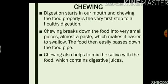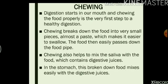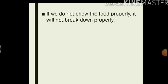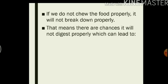Chewing also helps to mix the saliva with food which contains digestive juices. In the stomach this broken-down food mixes easily with the digestive juices. If we do not chew the food properly it will not break down properly. Our mouth has teeth and tongue which help us to chew the food and break it down properly. But our stomach and food pipe do not have teeth to help them break down the food. So it is important that we chew it properly in our mouth before we swallow. When we do not chew our food properly there are chances that it will not digest properly, which can lead to indigestion.